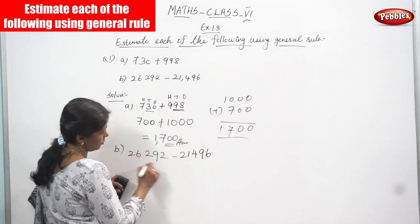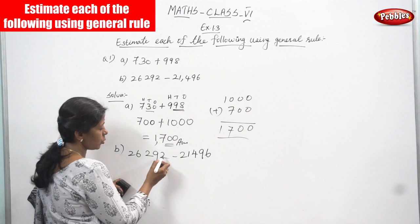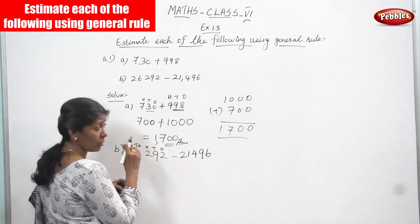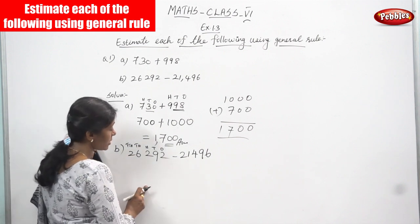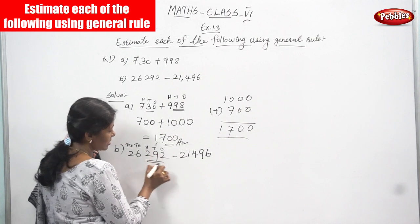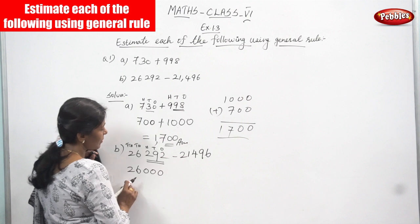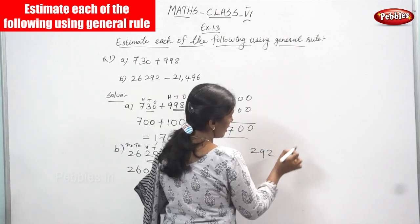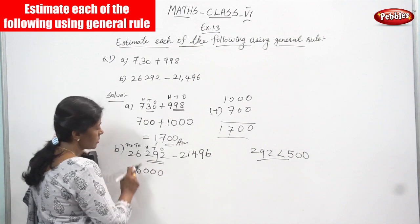Look at the number 26,292. It has 1s, 10s, 100s, 1,000s, and 10,000s places. We are going to round to the nearest 1,000. To round to the nearest 1,000, you have to consider the hundreds, tens, and ones — that is 292. Since 292 is less than 500, you round off the last three digits to 0. So the nearest 1,000 is 26,000.